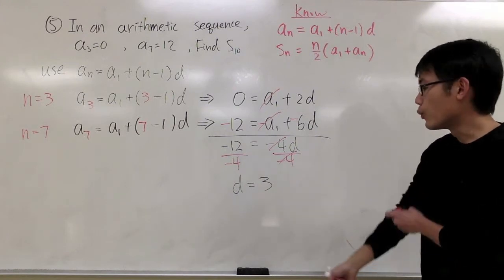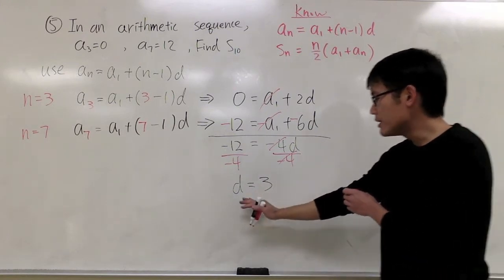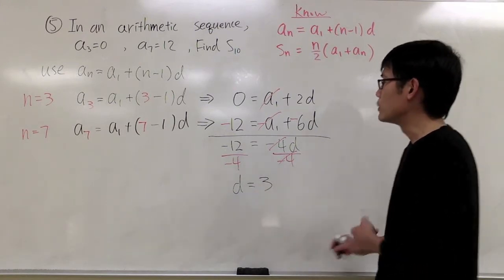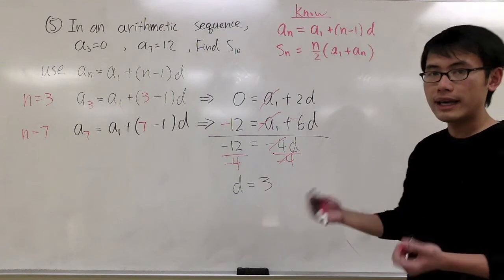Dividing both sides by negative 4, d is equal to negative 12 over negative 4, which is positive 3. So the common difference is equal to 3.